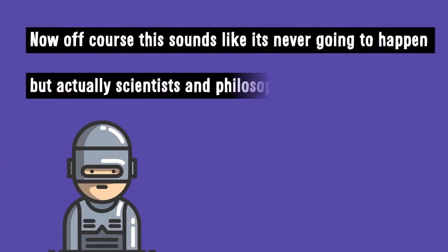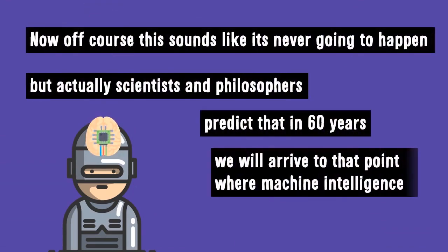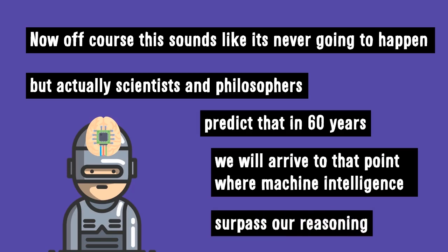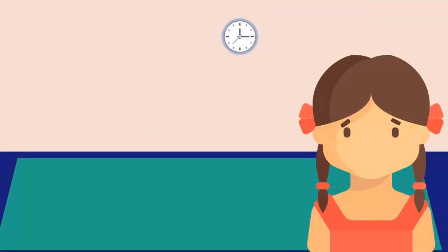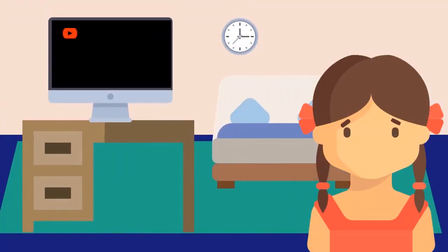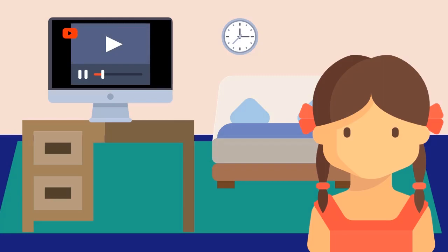Now, of course this sounds like it's never going to happen, but actually scientists and philosophers predict that in sixty years we will arrive to that point where machine code surpasses our reasoning. In the meantime, we don't have to worry much about that yet. Specialized artificial intelligence are now still commonly used in simple everyday activities, such as suggesting you videos based on what you like and analyzing your diet habit.